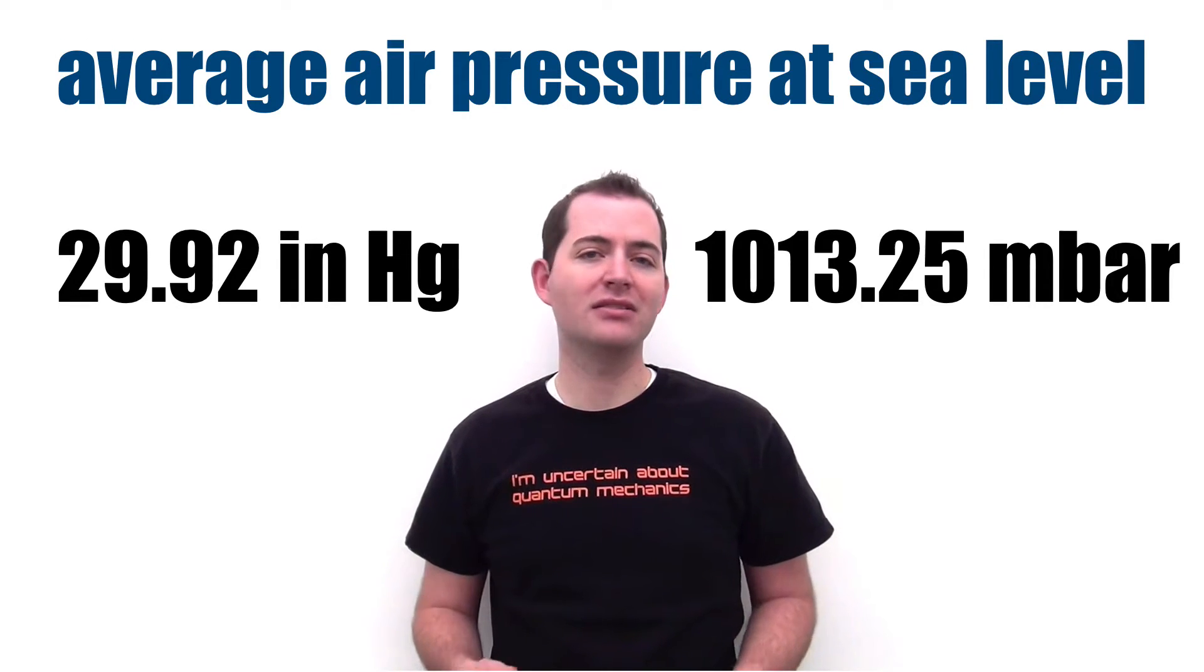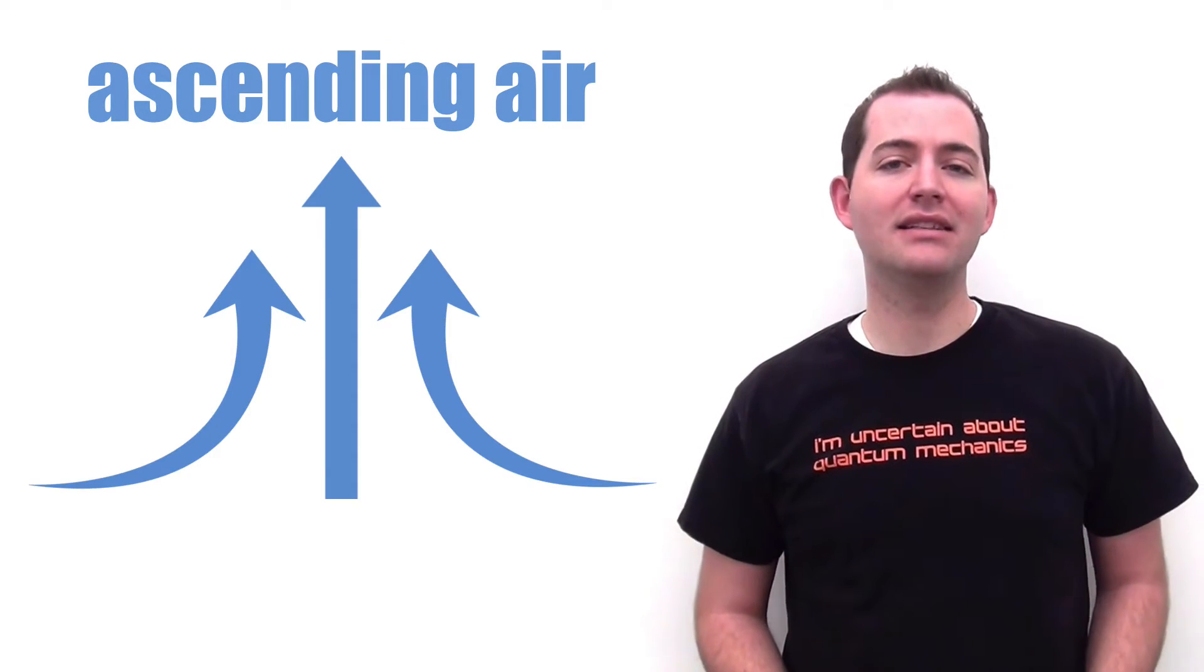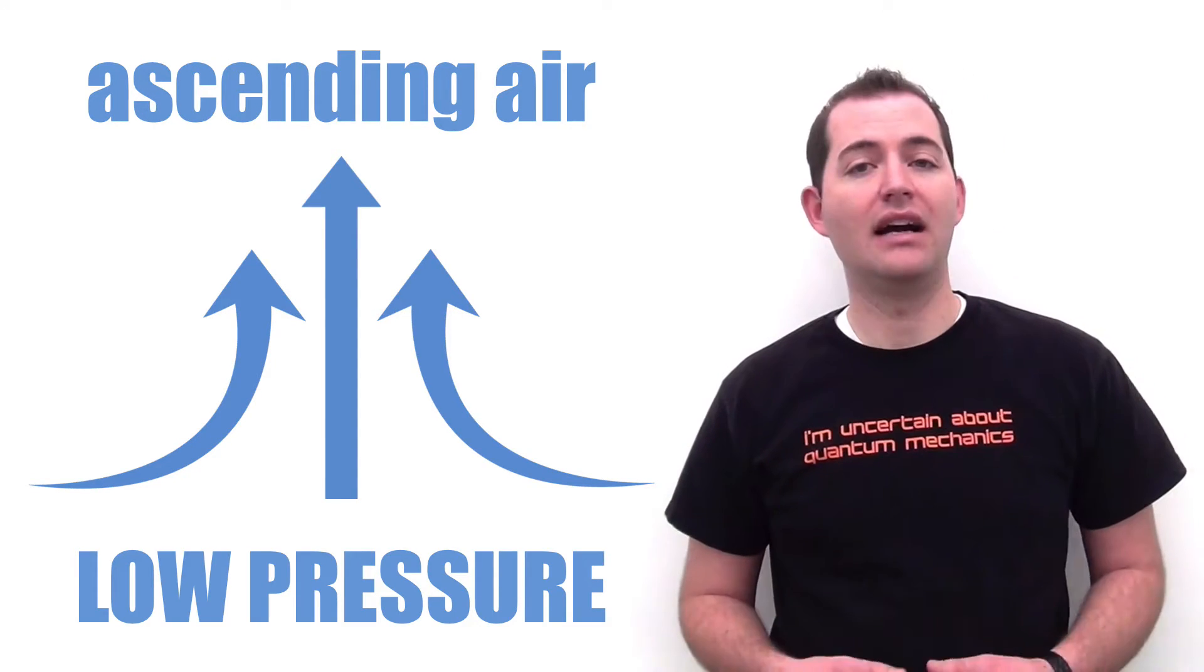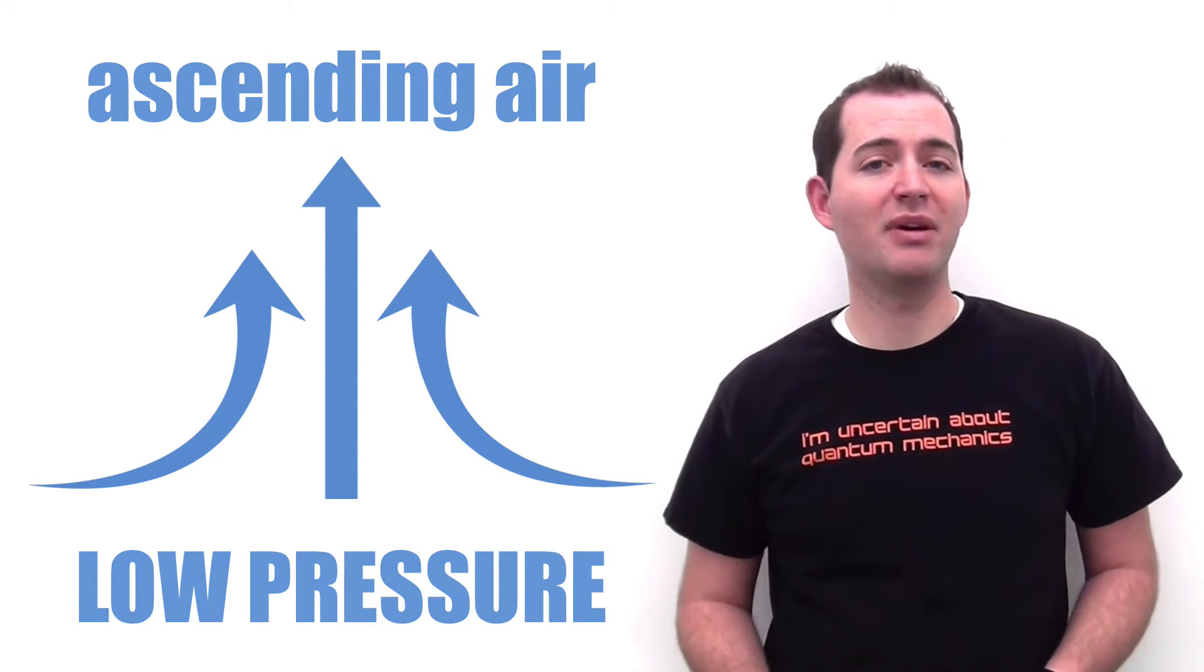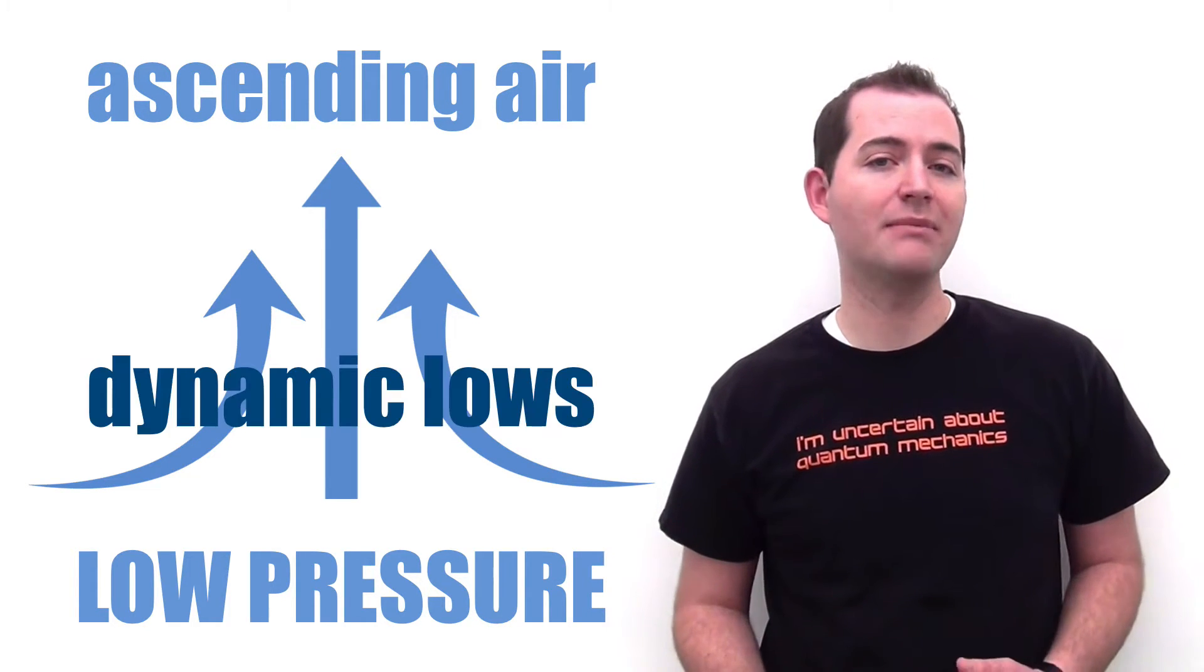Millibars are the units most commonly used in science and by meteorologists. Ascending or rising air tends to cause a lower pressure at the earth's surface, and low air pressure caused by this ascending air is sometimes referred to as dynamic lows.